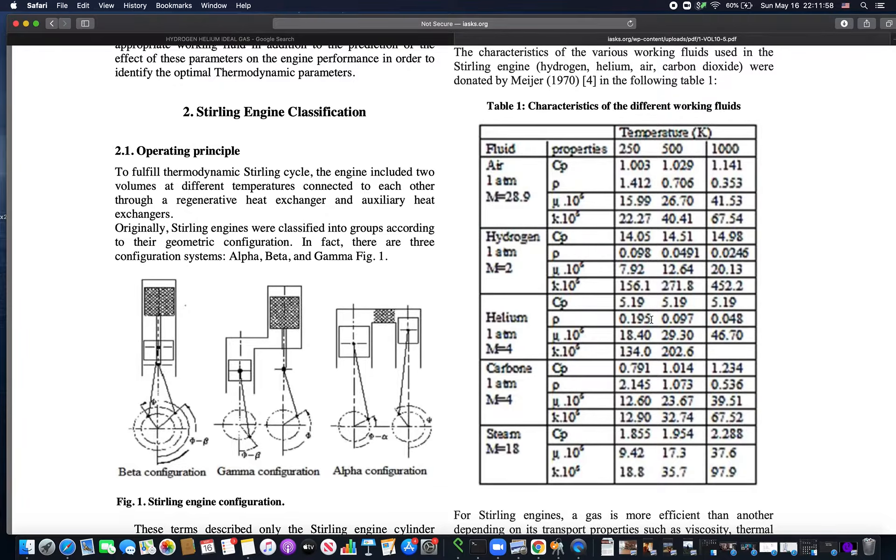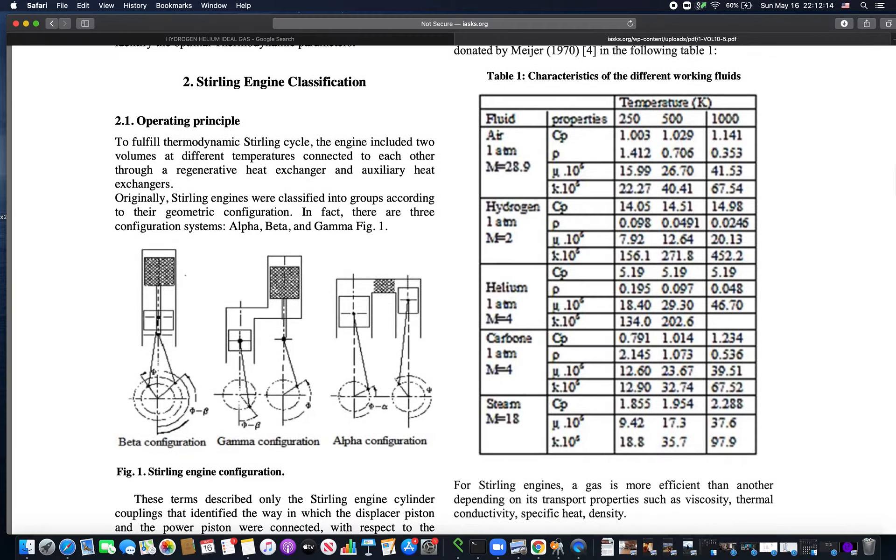Helium is also about twice as dense. And hydrogen, that's the rho thing here. Being twice as dense means that it can't expand as fast, rapidly move up and down, which decreases efficiency.